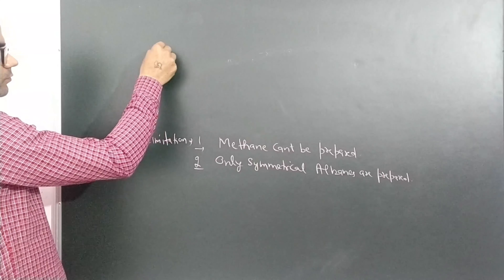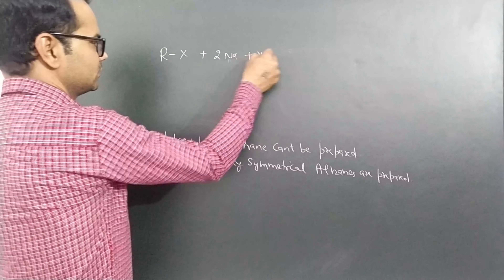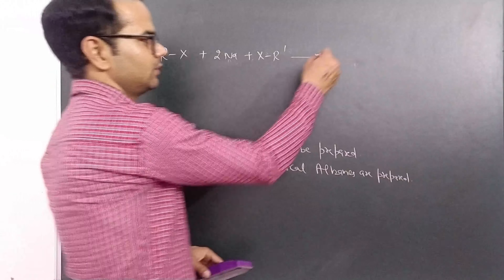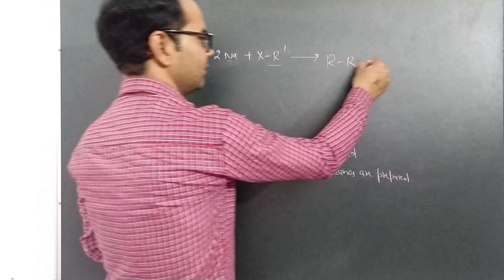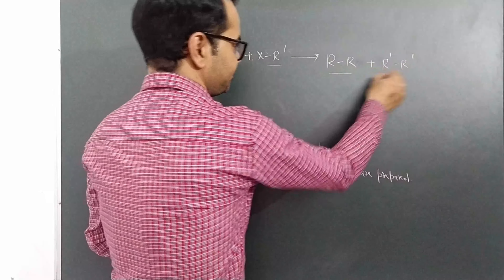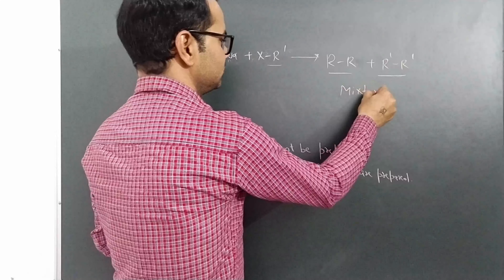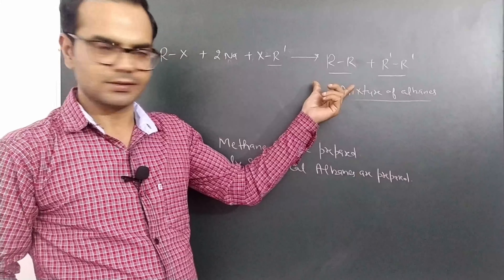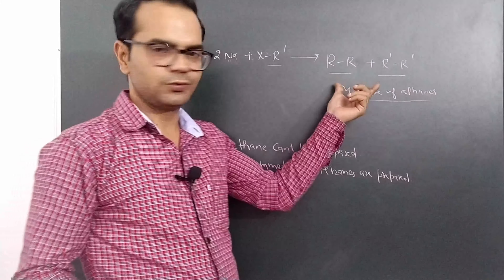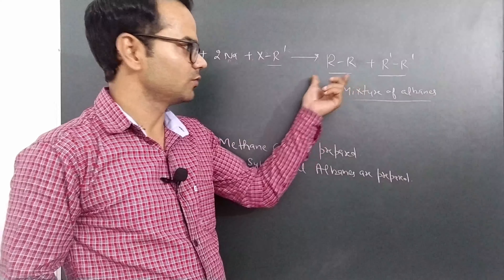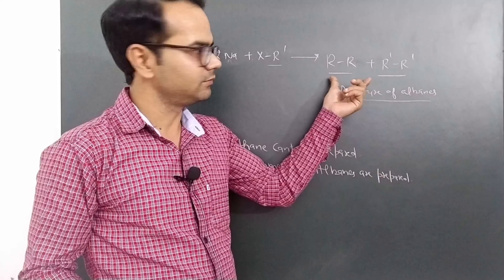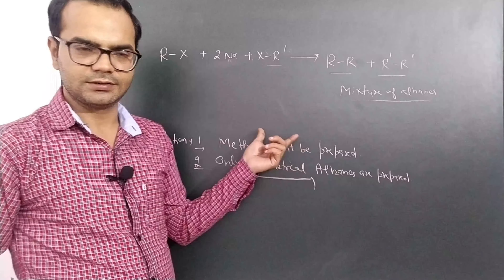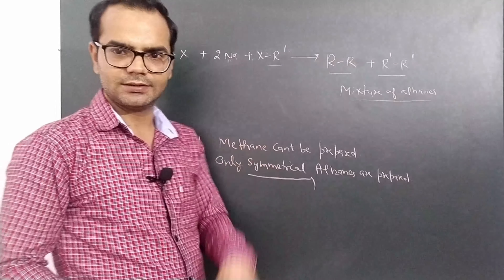If we use two different alkyl groups — for example, R-X plus two sodium plus X-R' — then a mixture of alkanes will form. R will combine with R to form R-R, and R' will combine with R' to form R'-R'. Due to comparable boiling points, it is not easy to separate them. That is the limitation of the Wurtz reaction, which is why it is preferred only to prepare symmetrical alkanes.